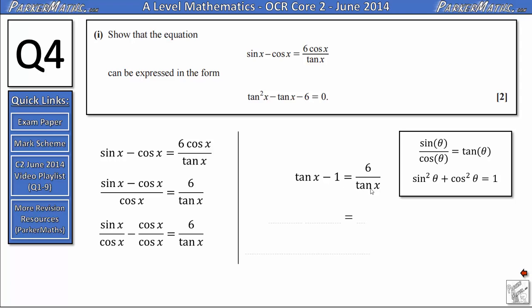Next we multiply both sides by tan x to remove it from the bottom of this fraction. That will give us tan²x - tan x. And on the right hand side we'll just have 6. Finally subtracting 6 from both sides gives us tan²x - tan x - 6 = 0.